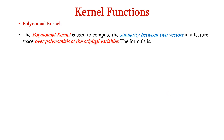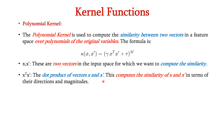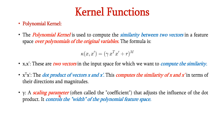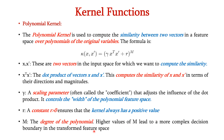Next, we have the polynomial kernel. The polynomial kernel is used to compute the similarity between two vectors in a feature space over polynomials of the original variables. The formula is K of X comma X dash is equal to gamma into X transpose X dash plus R, raised to the power M. Here X and X dash are two vectors in the input space. X transpose into X dash is the dot product, computing similarity in terms of directions and magnitudes. Gamma is the scaling parameter controlling the width of the polynomial feature space, R is a constant greater than 0 ensuring a positive value, and M is the degree of the polynomial.